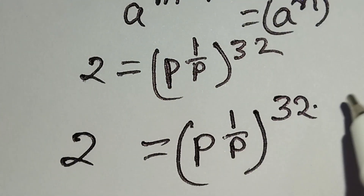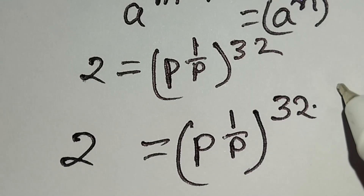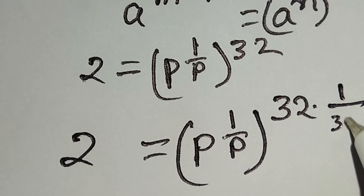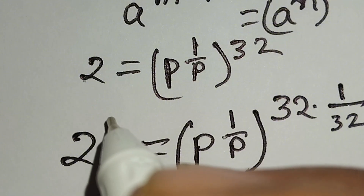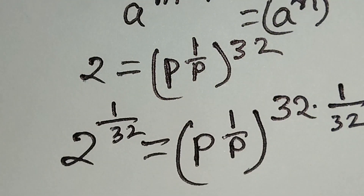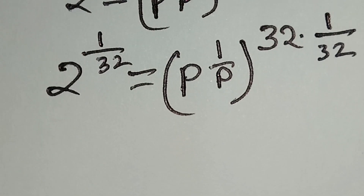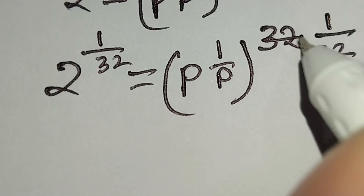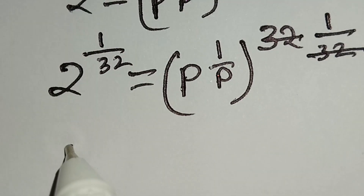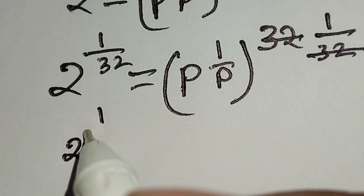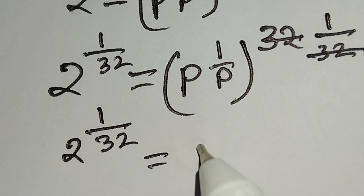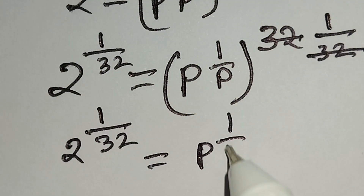Now we will multiply both sides' power by 1 over 32. Here 32 times 1 over 32 — this 32 and this 32 cancel out — giving us 2 to the power 1 over 32 is equal to p to the power 1 over p.